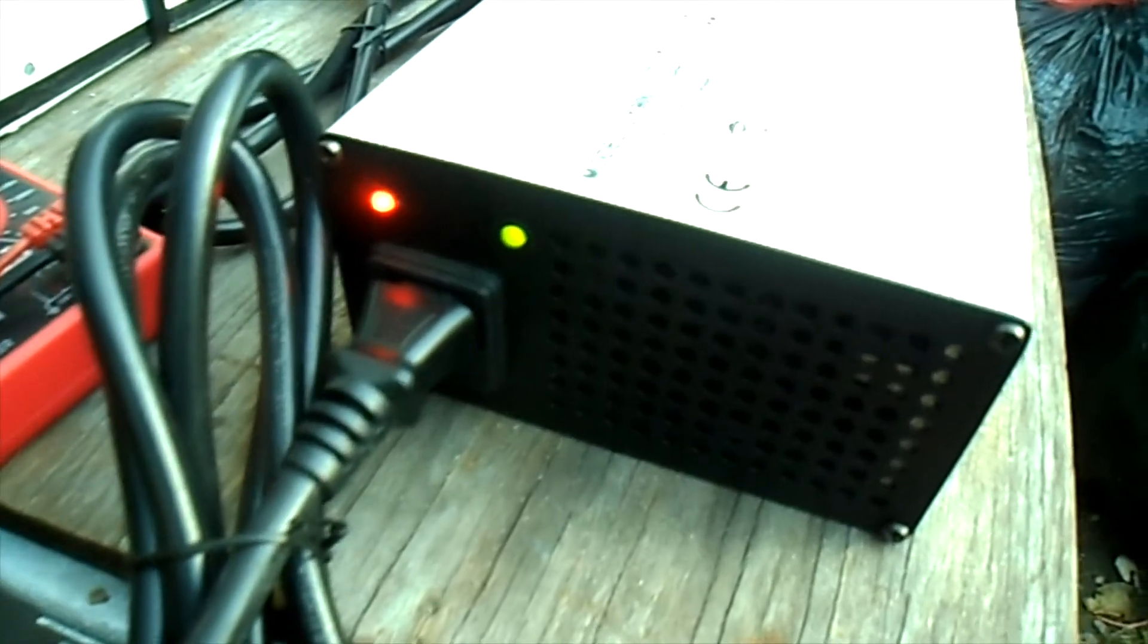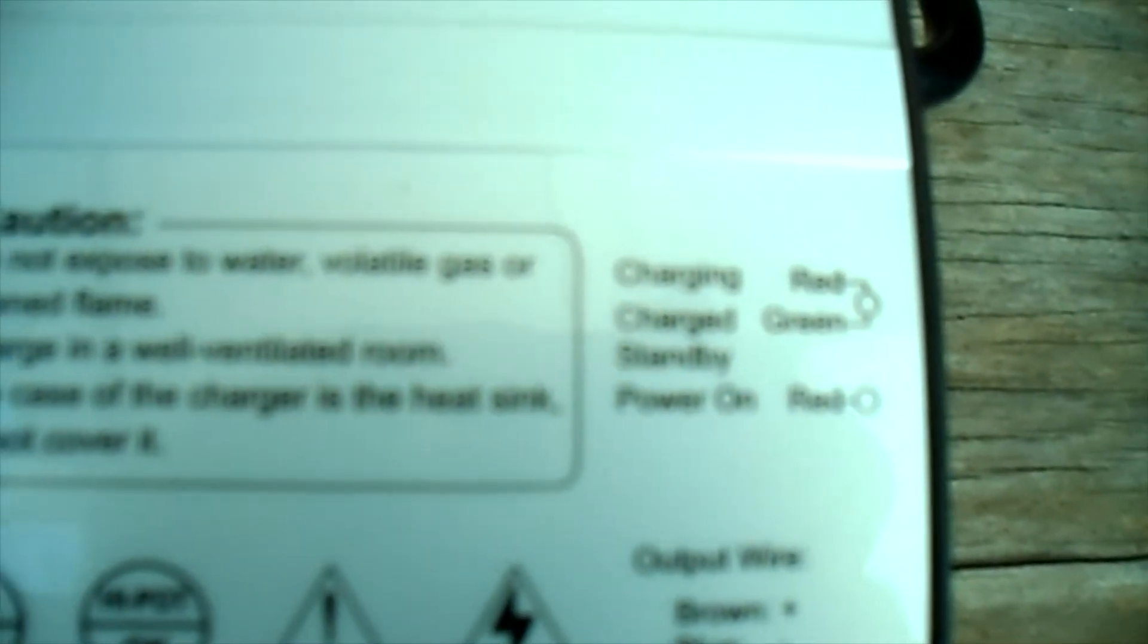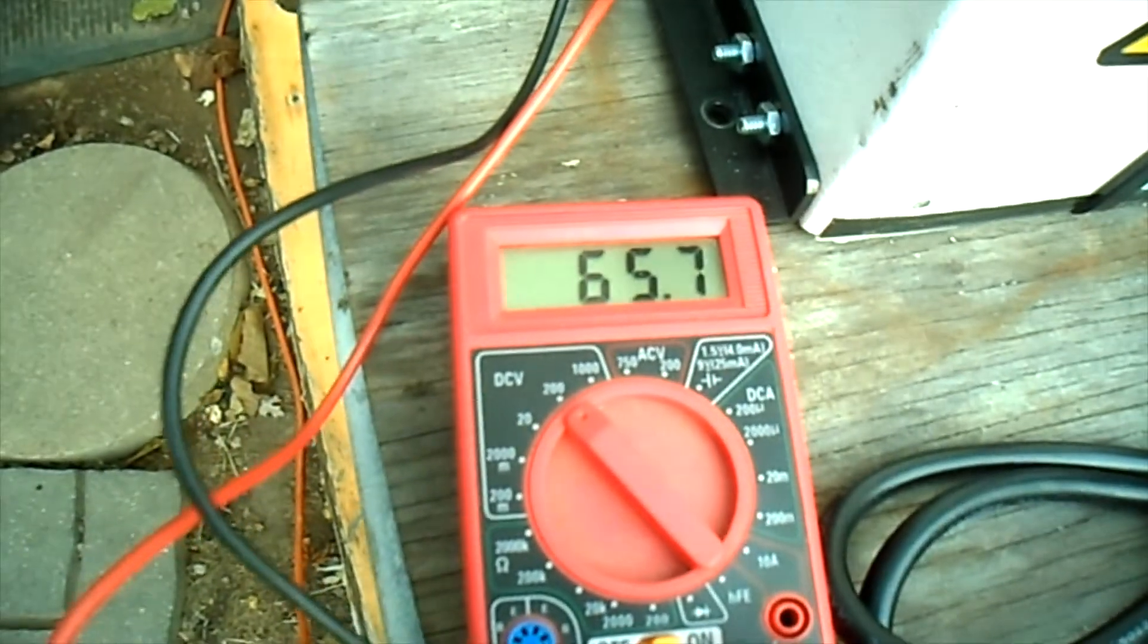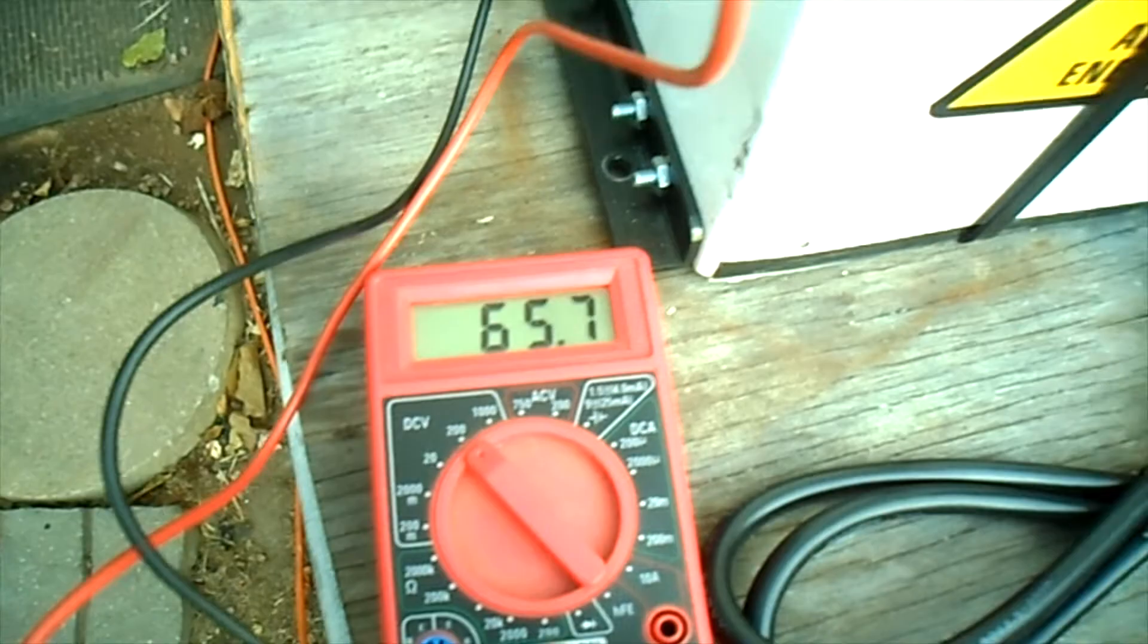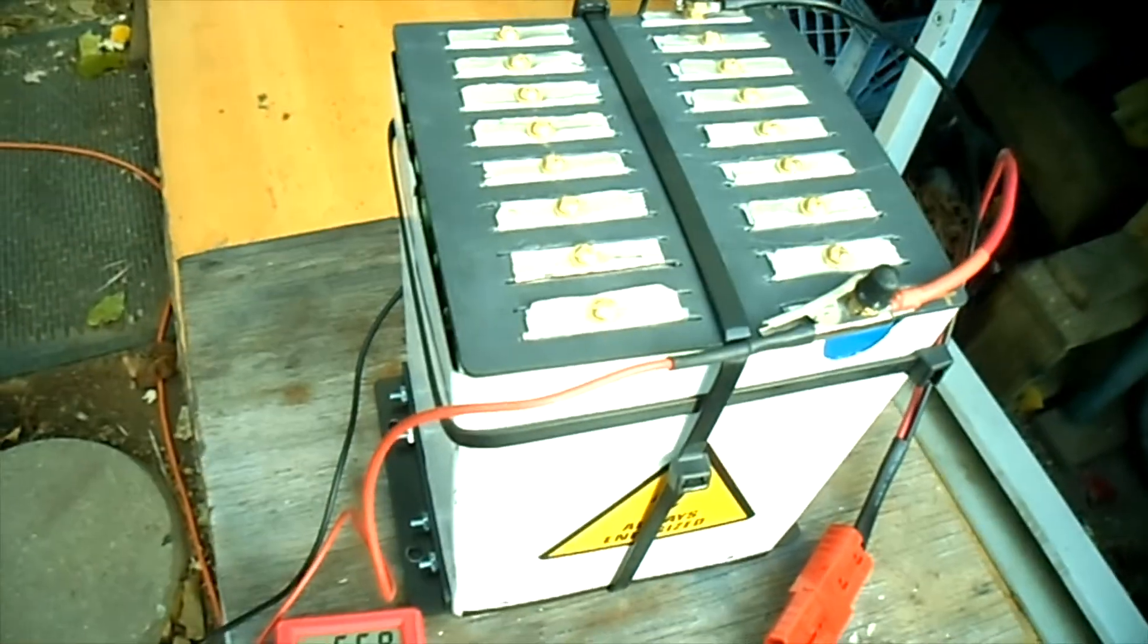All righty, we have a green light, and according to this, means charged. Our meter says we're up to 65.8 volts in our battery pack.